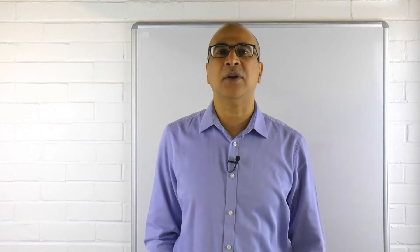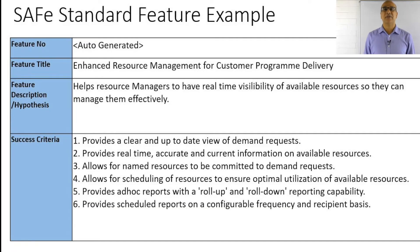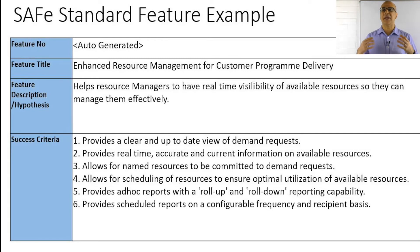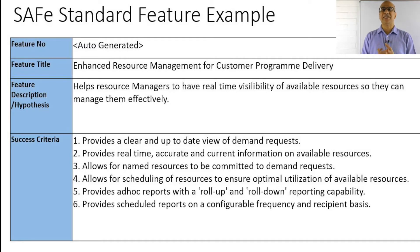Let's have a quick look at a real-world example — some confidential information has been stripped out, but the essence is there. This is about resource management: how do we get managers allocated to the right projects at the right time in the most efficient and effective way? So we have a simple and clear title, hopefully understandable to someone who's not technically savvy. We've got a feature description: 'helps resource managers to have real-time visibility of available resources so they can manage them effectively.' And we've got a list of very clear, simple, straightforward success criteria. Note two very important things: first, we don't really say how we're going to do it.